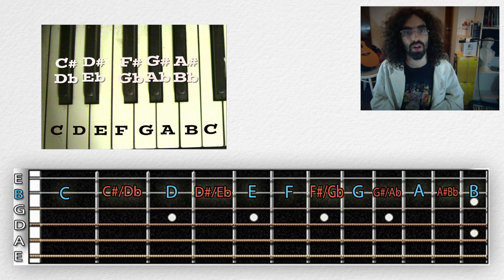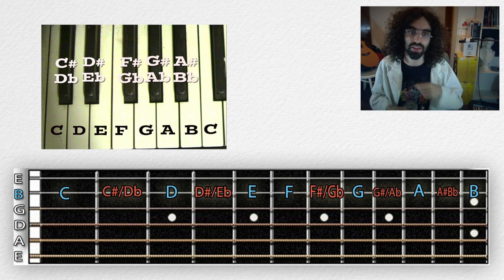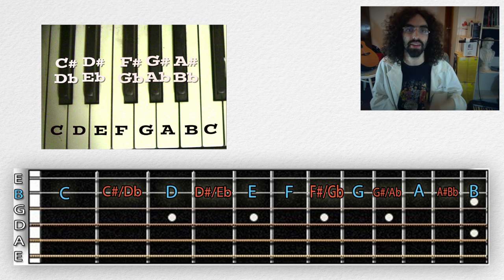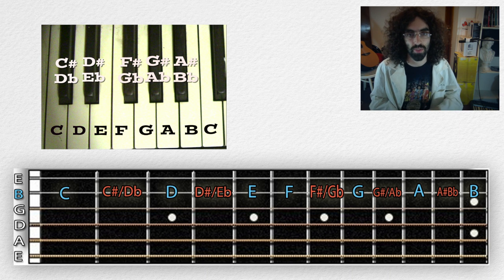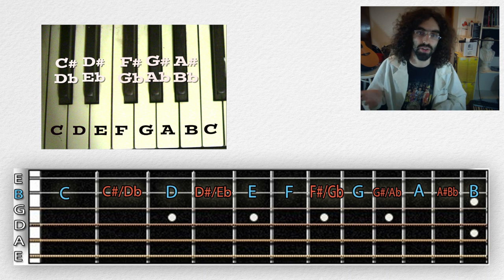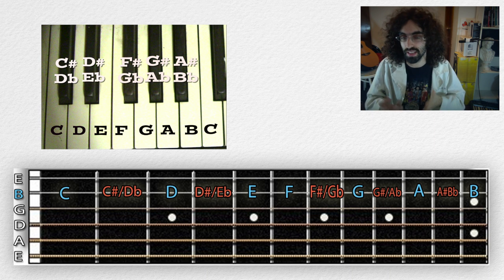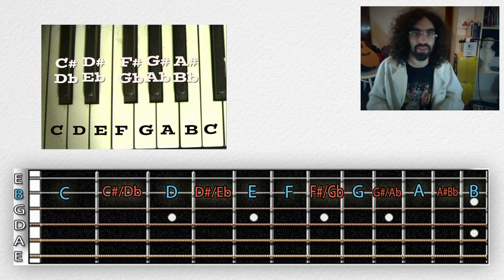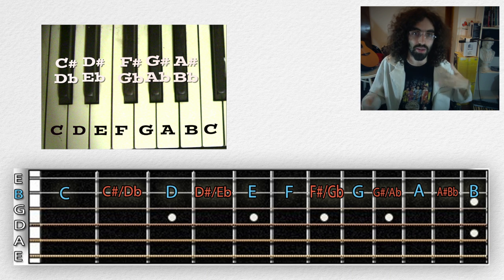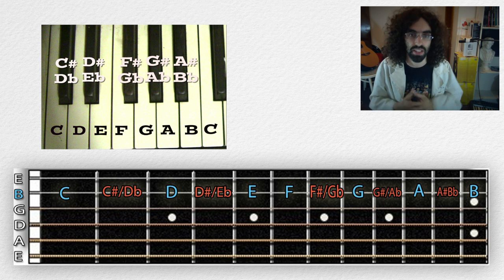When you move a note up a half step, you are sharping the note. For instance, C up a half step is C-sharp. When you move down a half step, you are flatting the note. For instance, D down a half step is D-flat. That's why C-sharp and D-flat are both names for the same note.